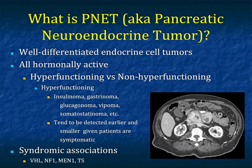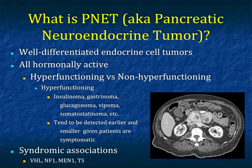What are neuroendocrine tumors, or NETs? They're well-differentiated endocrine cell tumors. All are hormonally active, but we divide them into hyperfunctioning and non-hyperfunctioning. When they're non-hyperfunctioning, they're not causing any specific symptoms. Typical hyperfunctioning examples include insulinomas, gastrinomas, glucagonomas, VIPomas, and somatostatinomas.